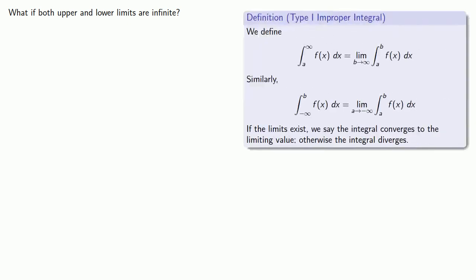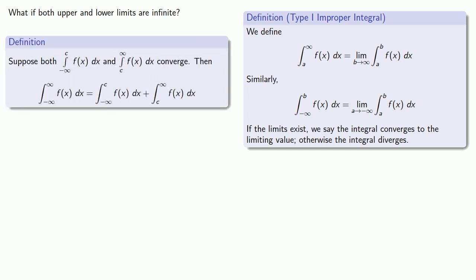Our definition for improper integrals of the first type required that either the upper or the lower limit go to infinity. But what happens if they both go to infinity? To answer that question, we'll fall back on a useful property of the definite integral. We can split the integral. And so suppose the integral from minus infinity to c and from c to infinity both converge. Then the integral from minus infinity to infinity is going to be the sum of these two integrals.